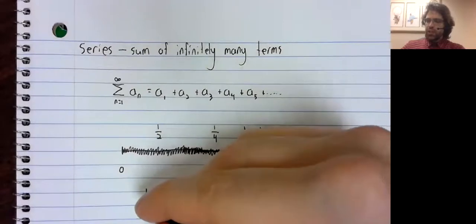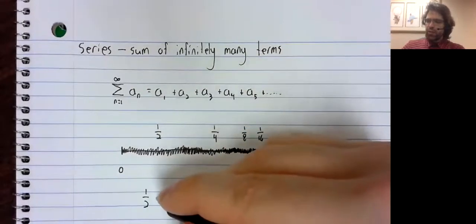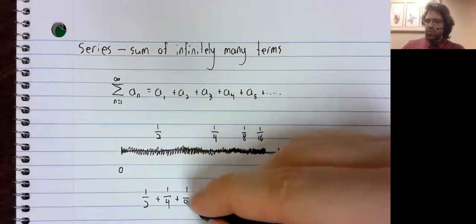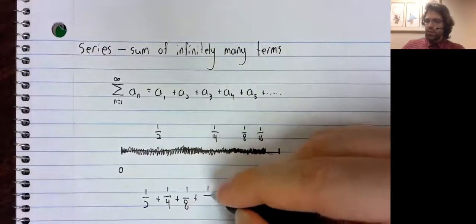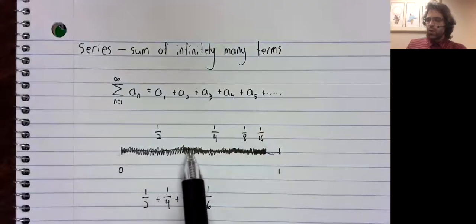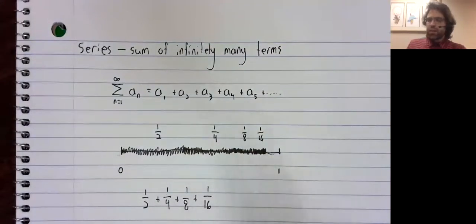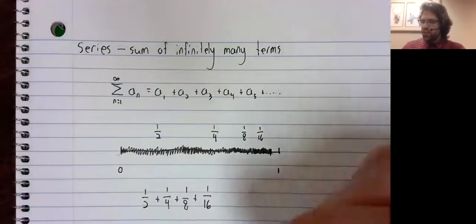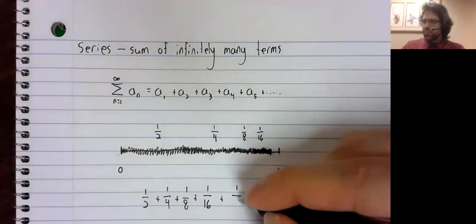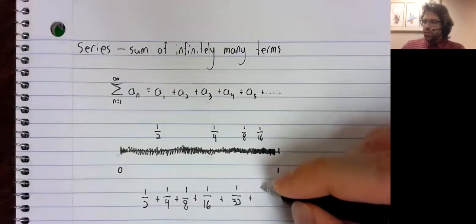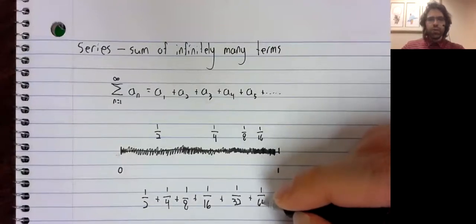So if we take one half, plus one fourth, plus one eighth, plus one sixteenth, we get to this length. Put in a one thirty-second and a one sixty-fourth.